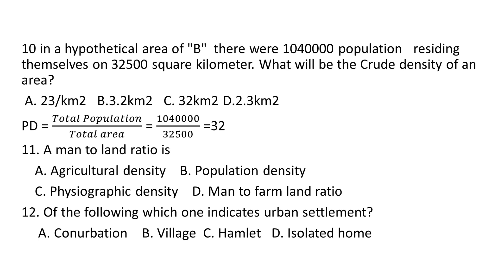Question number 10. In a hypothetical area B, there were 1,014,000 population residing on 32,500 km². What will be the crude density of the area? A. 23 per km², B. 3.2 per km², C. 32 per km², D. 2.3 per km². Population density equals total population divided by total area: 1,014,000 divided by 32,500 km². The answer is C — 32 per km².